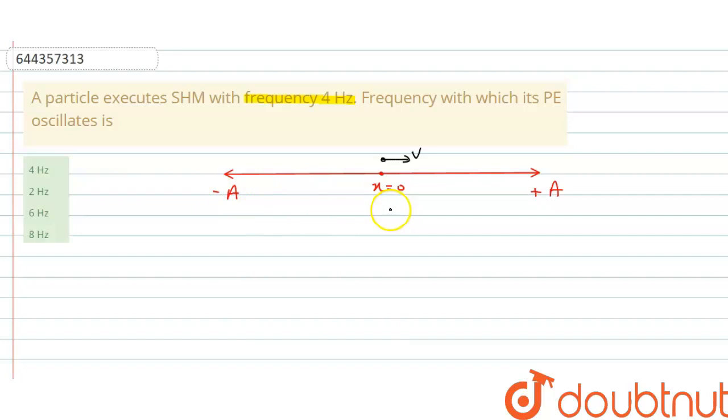Because after that, it will repeat the motion. Since particle starts from mean position moving towards positive extreme position, after completing this cycle it will again move towards positive extreme position. So this is called one complete oscillation.